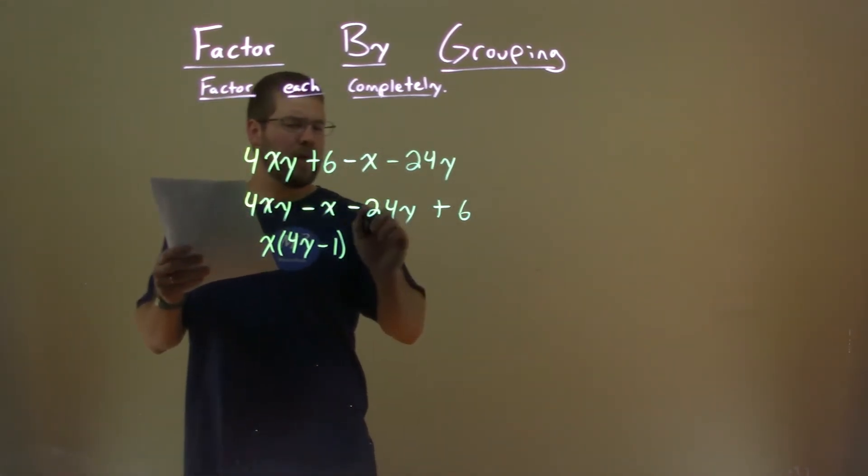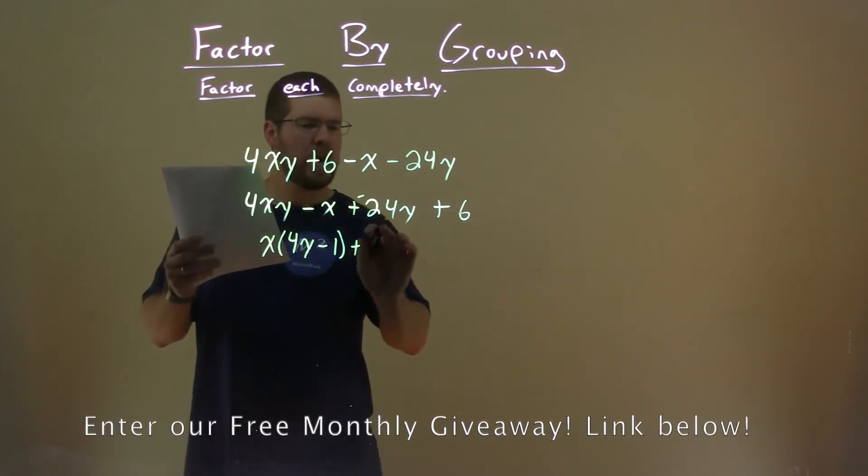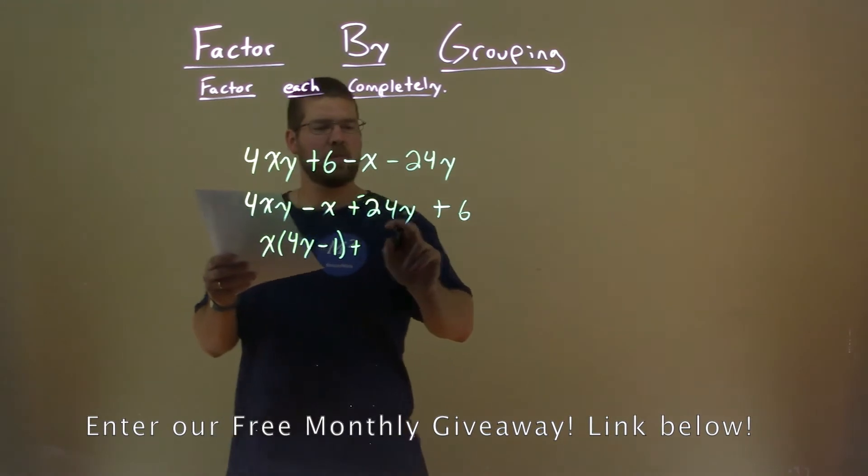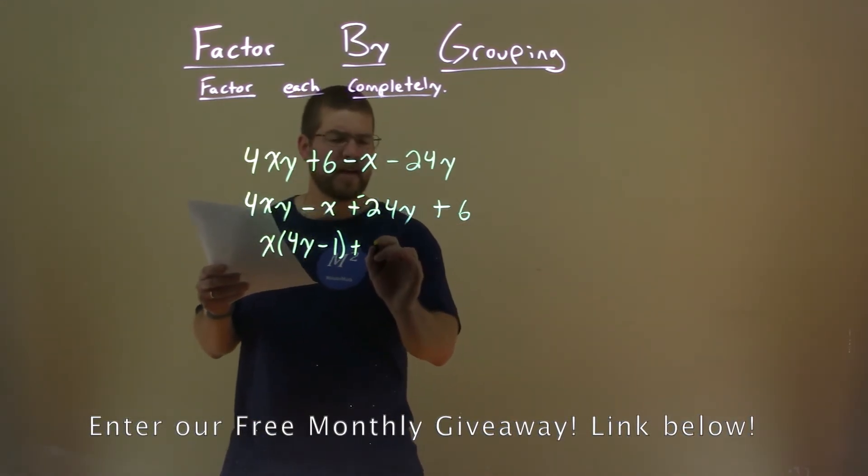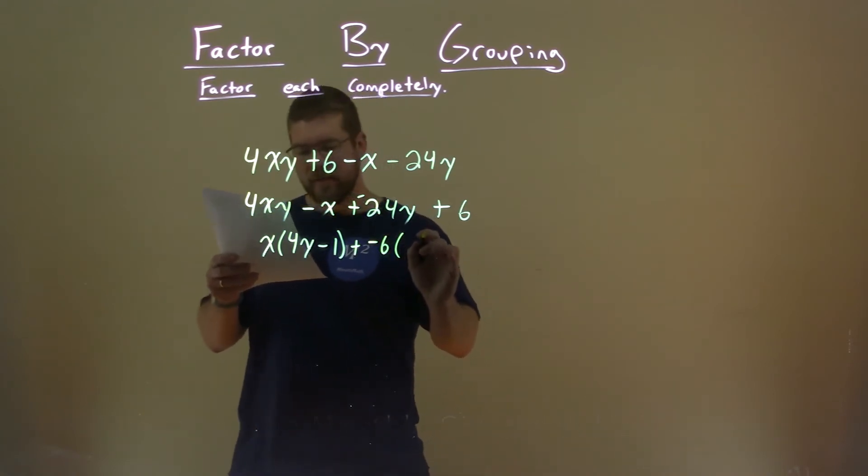This minus 24y, I like to write that as plus a negative. So, we have a plus here, and then we're going to pull out, well, what's in 24y and 6, or negative 24y? And that's a negative 6. So, I'm actually going to pull out the negative 6 here, leaving me with a positive 4y minus 1.